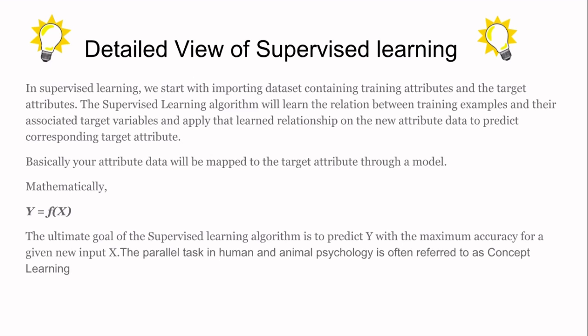Mathematically, we formulate a function F such that it maps from training attributes to target attributes — that is, from X to Y. After we get that function, we take unknown examples, that is unknown X, and predict Y for the same. The ultimate goal of supervised learning is to predict Y with maximum accuracy given a new input X.